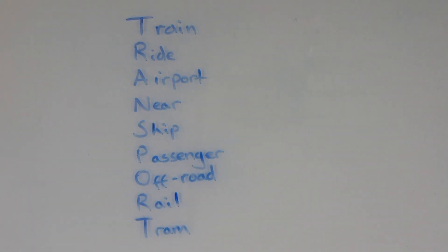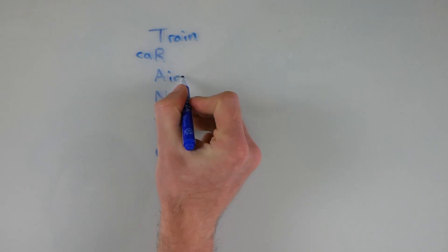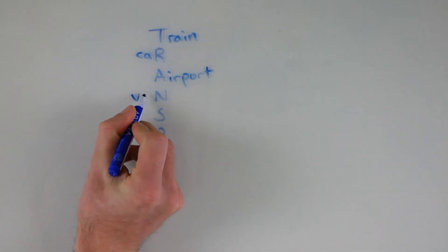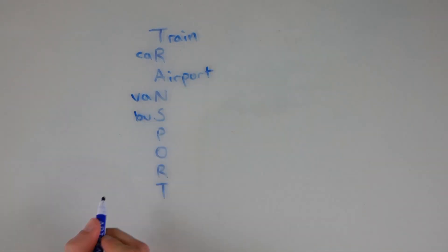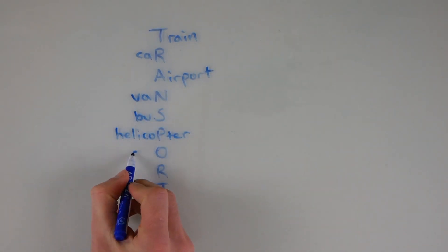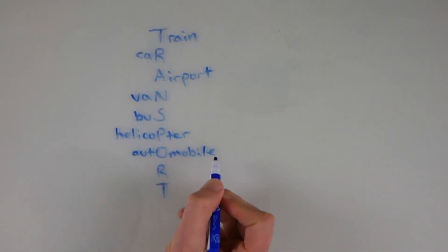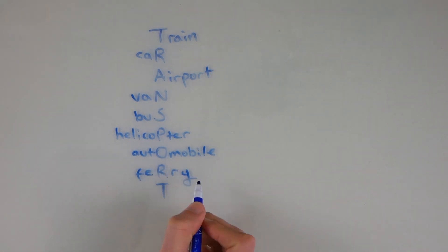As you can see, some of these words are quite advanced, and in some cases your students won't be able to get all the letters. A slightly easier version is where the acrostic letters don't have to be at the start of the word but can be anywhere within it. So for transport we could have: train, car, airport, van, bus, helicopter, automobile, ferry, and boat.